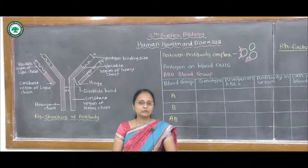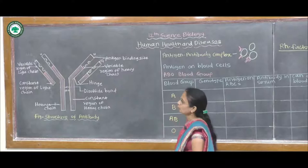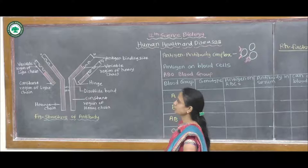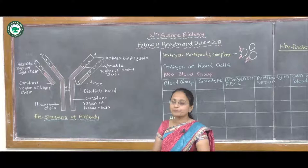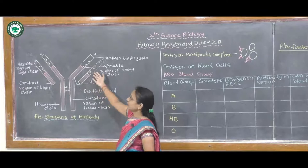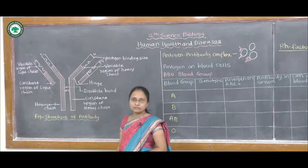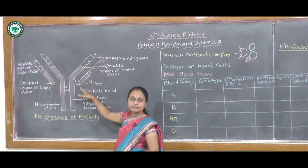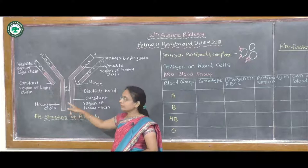This diagram shows the Y-shaped structure of the antibody. This antibody is made up of four polypeptide chains — two light chains on the outside and two heavy chains on the inside. The light chain is divided into two regions, and similarly the heavy chain is also divided into two regions.